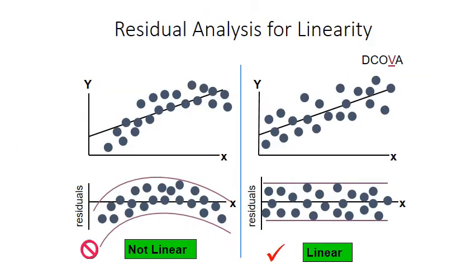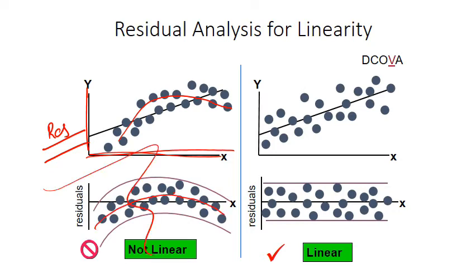After finding this error, we plot residuals on the y-axis and x on the x-axis. If they form a particular pattern, like here where they are forming some particular pattern, then it is not linear. Here we cannot find any particular pattern, so it is linear.